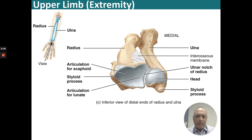This is the inferior view of the distal ends of the radius and the ulna. Here we can see the articulation for the scaphoid, the styloid process, as well as articulation for the lunate, the ulnar notch of the radius, the head of the ulna, and the styloid process of the ulna — as they're going to articulate with the scaphoid and lunate bones.